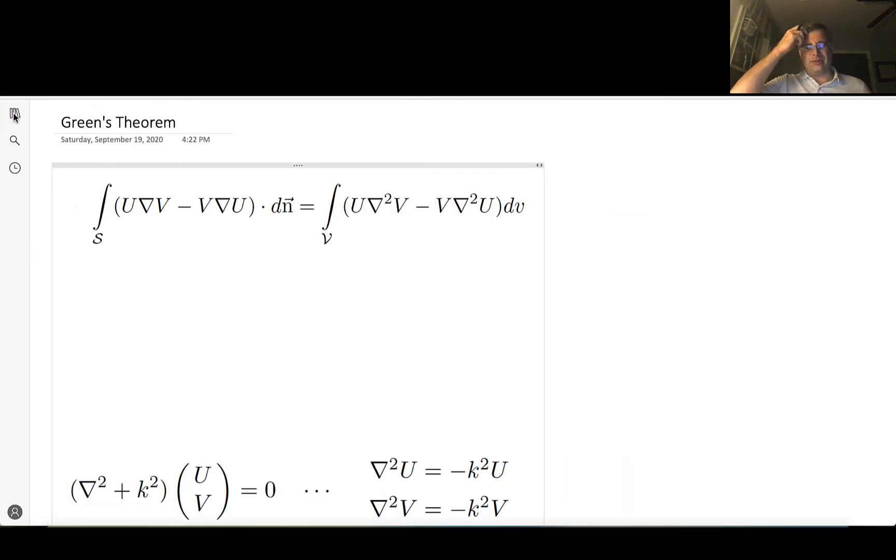So we start off with Green's theorem. And here's a really nice elegant three-dimensional version of Green's theorem that we're going to prove really quick. So keep in mind, this is a purely mathematical function. So we have u as a function of x, y, and z. And then we have another scalar function, v, as a function of x, y, and z.